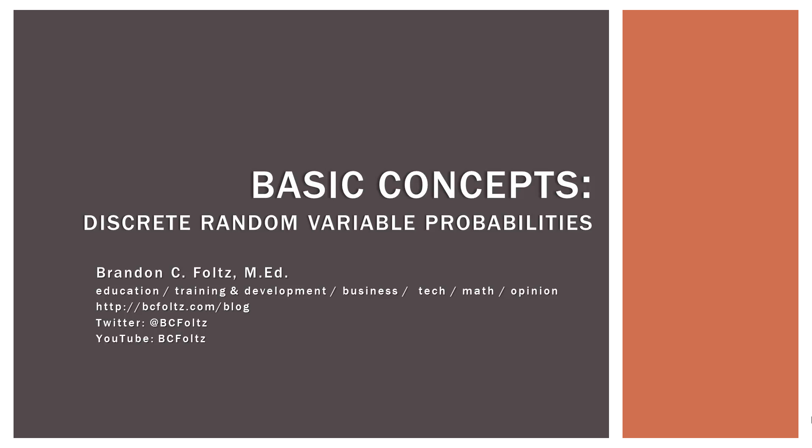That is it for this video. We covered the basic concepts of discrete random variable probabilities. In future videos we'll do more involved and complex examples, but this gives you the fundamental idea of how the tables and graphs are constructed. If you like this video, please give it a thumbs up, share it, or add it to your playlist. Or if there are things I can do better, please let me know in the comments below. Thank you very much for watching, and I look forward to seeing you next time.